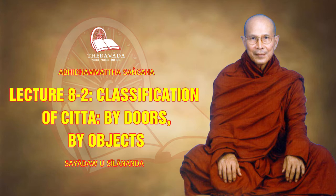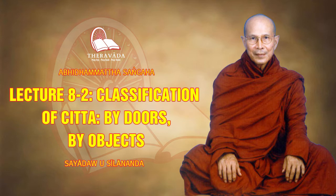Now we come to the mind-dwar. Types of consciousness that arise through mind-dwar are altogether 67, according to the chart. The object of these mind-dwar consciousnesses are not just a visible object or sound, but all six kinds of objects. Yesterday we learned that there are six kinds of objects: visible object, sound, smell, taste, touch, and dharma object.